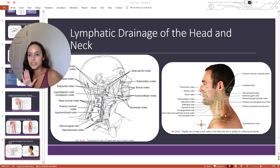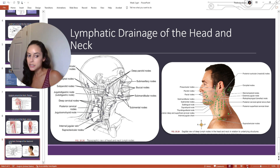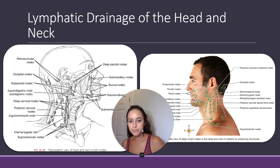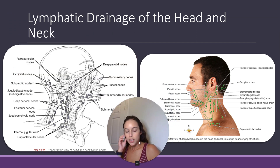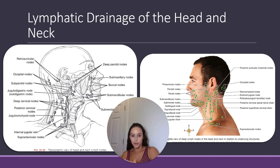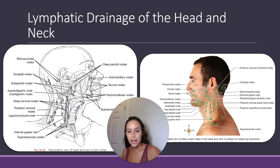Let's continue our lecture on the lymphatic drainage of the head and neck. I'm going to go along with the book to cover all of these lymph node groups. It can be extremely overwhelming at first because there's so much information, but we're going to break it down. A lot of these names are associated with the location of where they are, so as long as you know the bones and muscles found around your head and neck region, it'll be very easy to know where these nodes lie based on their name.